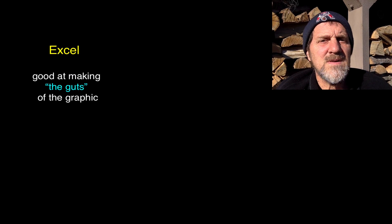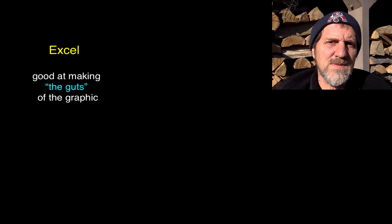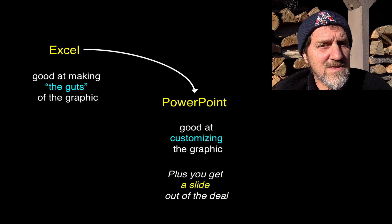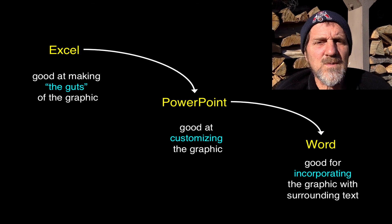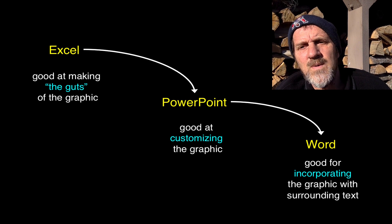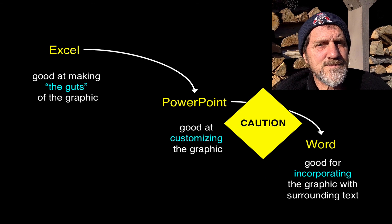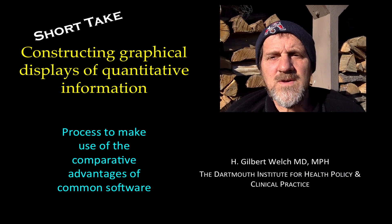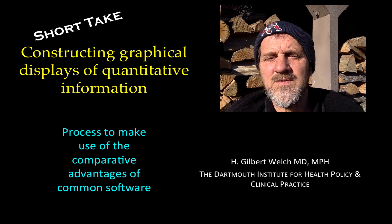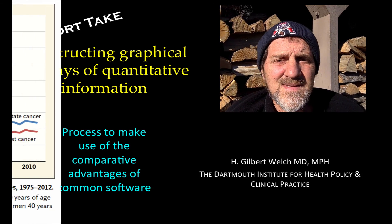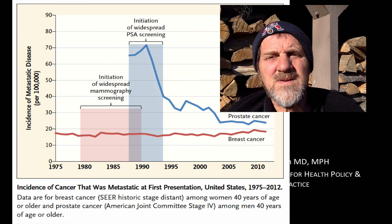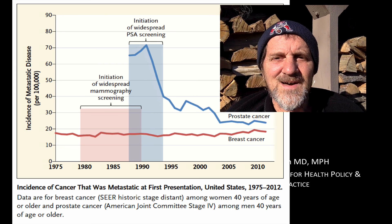So that's the basic thing I wanted to show you — three programs to produce a nice graphic. Draw a simple clean graph in Excel, which is good at making the guts of the figure. Move it into PowerPoint, which is good at customizing the graphic — labeling axes, labeling lines, adding complex graphical elements. Then select all objects and paste them into Word, which is good at incorporating the graphic with surrounding text. Caution at that step: remember to paste special as a PDF. Journal editors have a way of wanting to change things a little bit themselves, but you might as well give them something good to work with. I hope this helps.